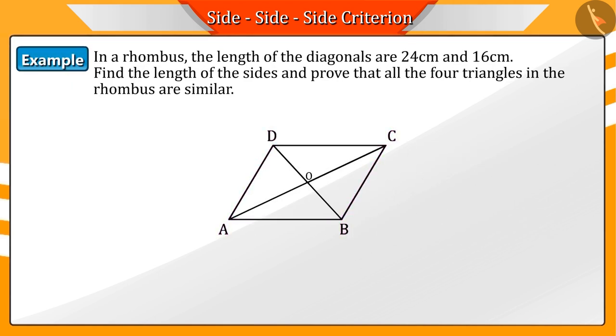The diagonals of a rhombus measure 24 cm and 16 cm respectively. Find the length of the sides of the rhombus and also prove that all four triangles in it are similar.